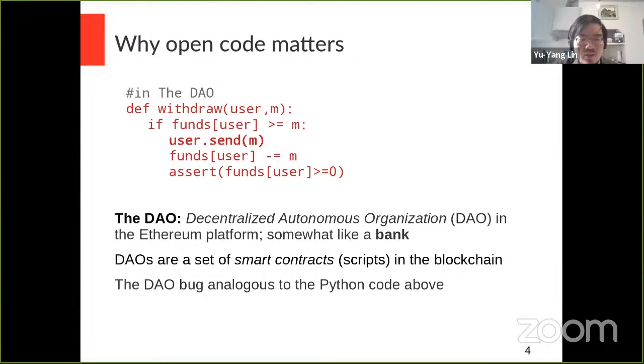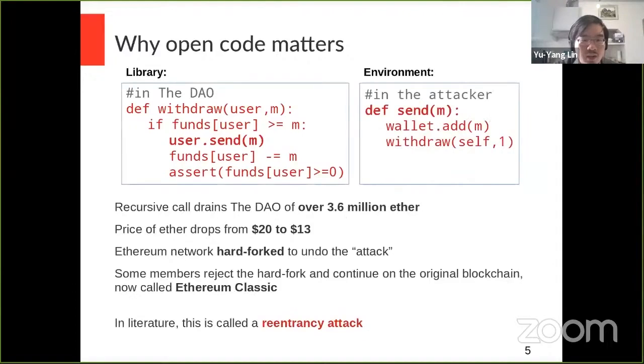This means that the call to send, which is highlighted in bold there, passes control to an unknown environment, which may then re-enter the withdraw function whenever it wants. And that is precisely what an attacker eventually did, treating the DAO as a library. We can define an environment for it that bypasses the check for sufficient funds, and then recursively calls the withdraw function indefinitely. The result was a loss of 3.6 million Ether, which at the time was approximately 150 million US dollars. The price of Ether dropped, the network was forked to undo the attack, and eventually, because people disagreed about it, the network split into two.